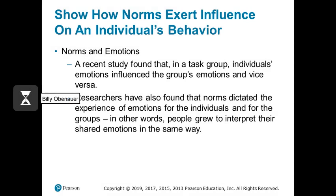Norms in groups can also influence our emotions, and this shouldn't be too surprising. Emotions have a kind of contagion to them. In our groups, when a few people get excited about something, more people get excited. When a few people get upset about something, more people get upset. This is important to understand because if we're looking to change emotional reactions in our groups, we have to think about what type of emotional labor we need to experience as individuals to influence our groups the way we want.